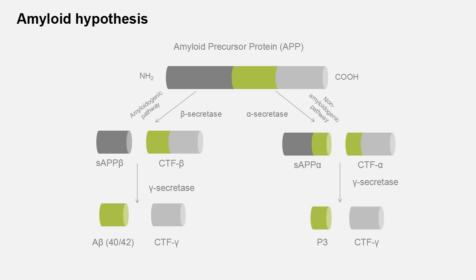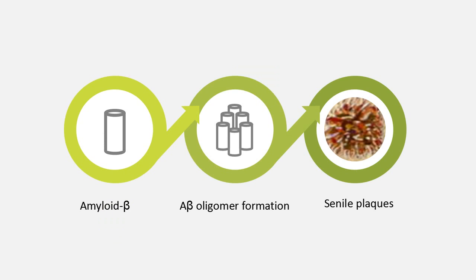Beta-secretase cleavage releases the soluble sAPPβ, followed by gamma-secretase cleavage of the membrane-bound C-terminal fragment to release amyloid beta. This is the amyloidogenic pathway. The non-amyloidogenic pathway results from alpha-secretase cleavage of the amyloid precursor protein. Amyloid beta is a neurotoxic and highly aggregatory hydrophobic peptide. The 42-residue form is more prone to aggregation than the shorter and less hydrophobic 40-residue form.